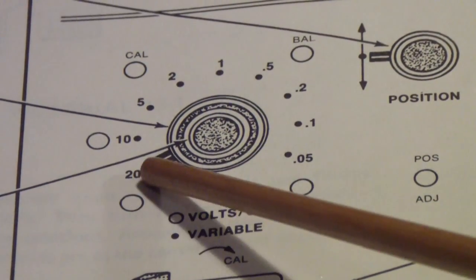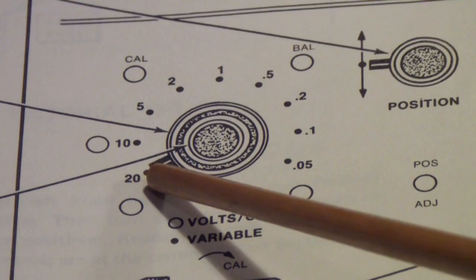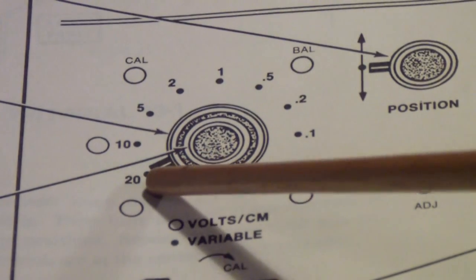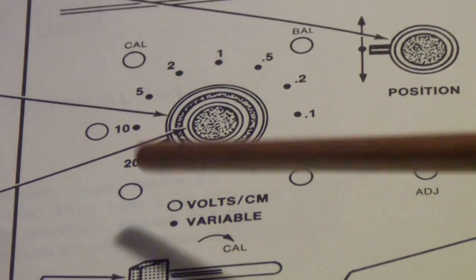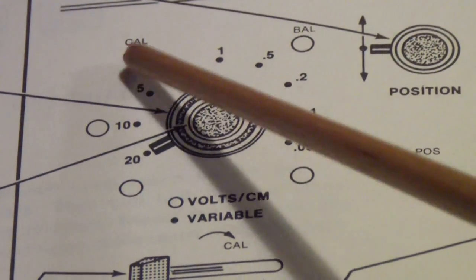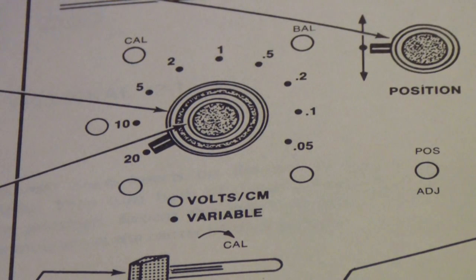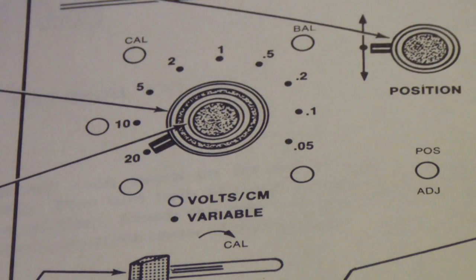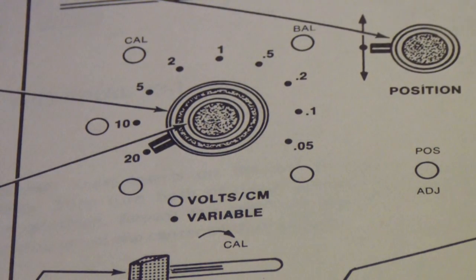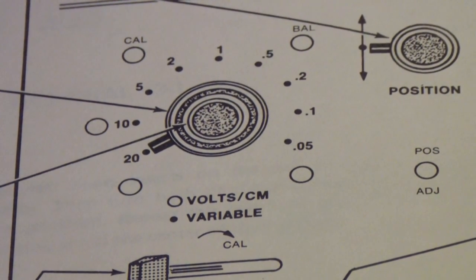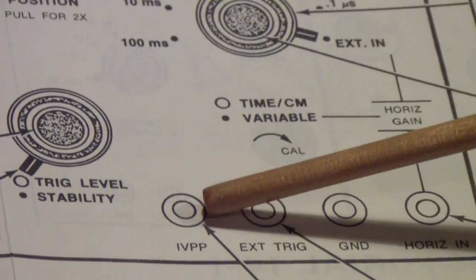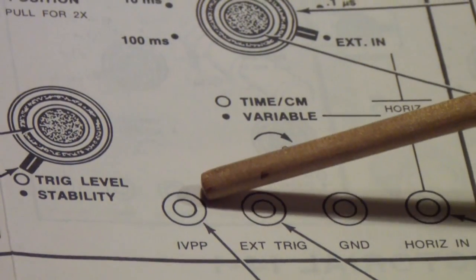You would also calibrate so that the indicated value, when this vernier knob was fully clockwise, was the indicated value. So if it said 10 volts per division, you wanted exactly 10 volts per division. And that was the cal control. And you had to actually go back and forth between these two several times to get a satisfactory result. And that is the purpose, that is setting the cal and the balance, is the purpose of the 1 volt peak-to-peak signal that I referred to in the earlier video.